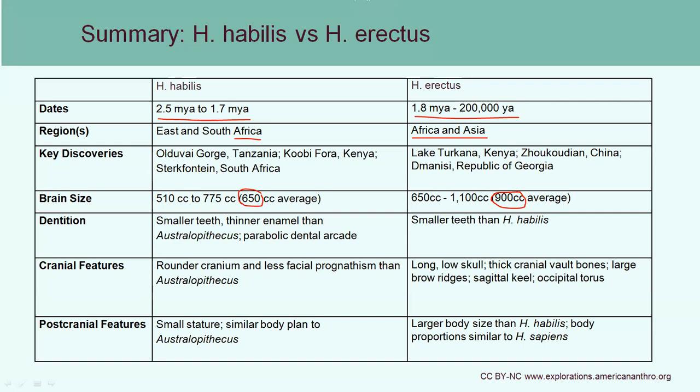The same pattern applies to facial prognathism — it's going to be more reduced in Homo erectus. In terms of body size, Homo erectus is actually about the same size as a modern Homo sapien. So if you found a full skeleton without the cranium, the rest of the skeleton looks almost exactly like modern Homo sapiens. It's mainly the cranial differences — brain size, teeth, and jaw — that help us identify the species. And that wraps it up for Chapter 10.